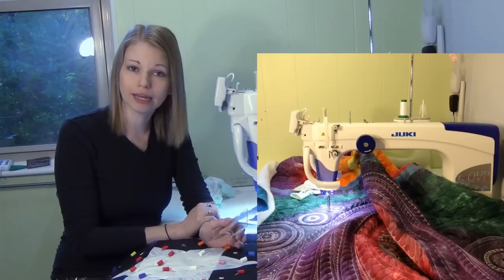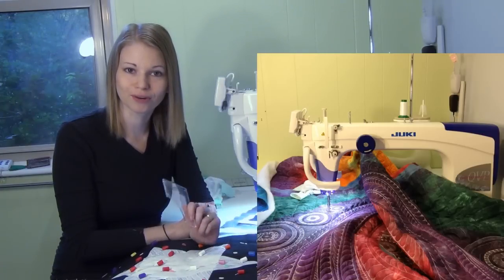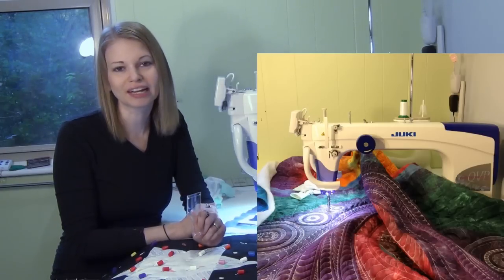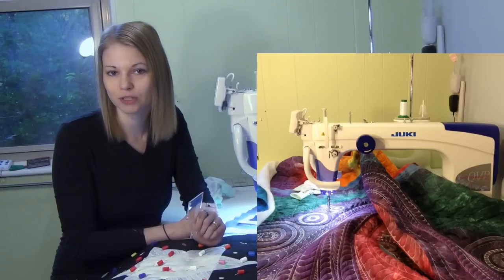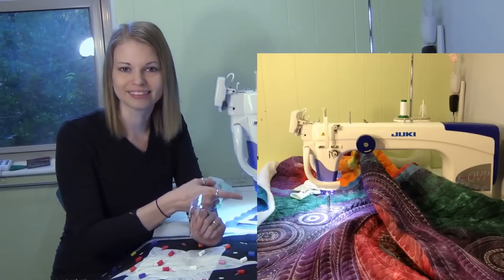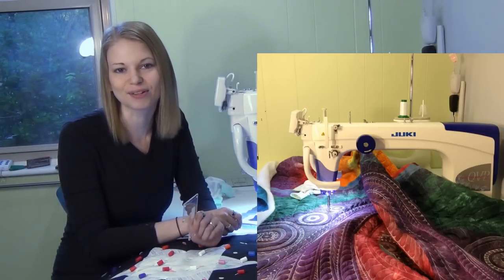If you'd like to learn more about the machine that I am using right now for quilting with rulers, you can check out my review. This is the Juki 2200. You can check out my review right here. Until next time, let's go quilt!